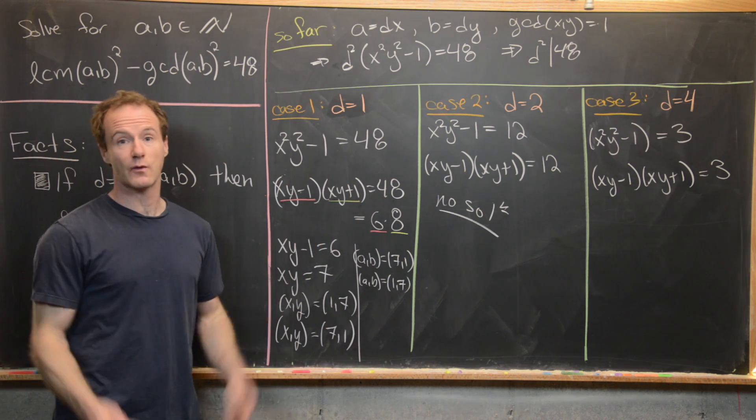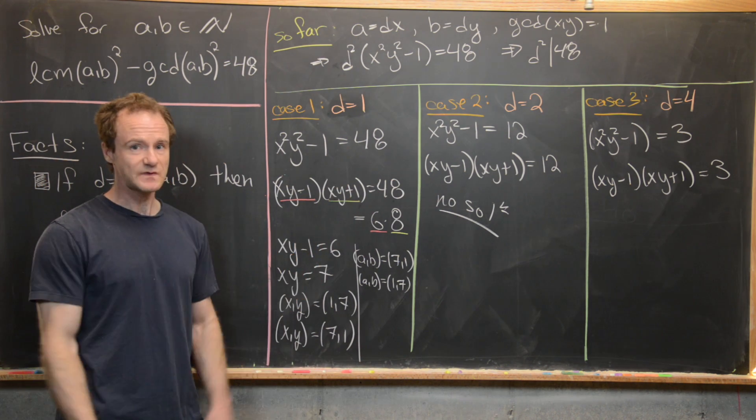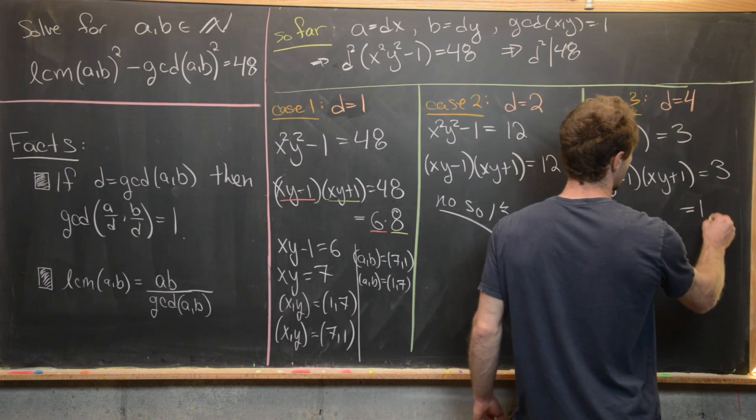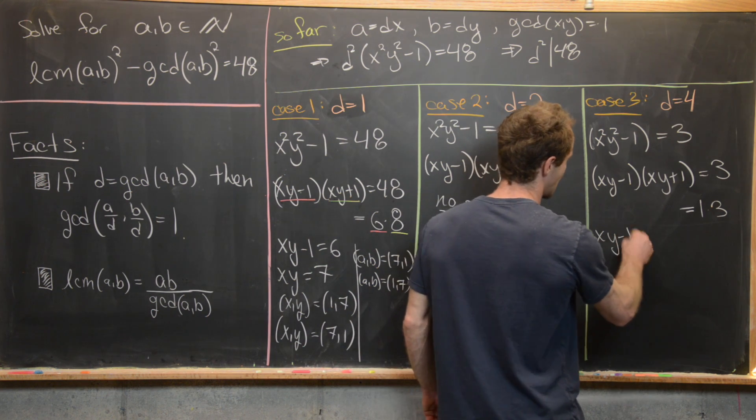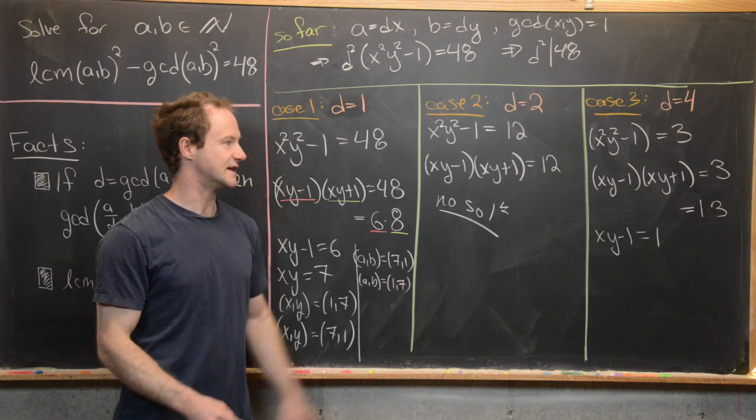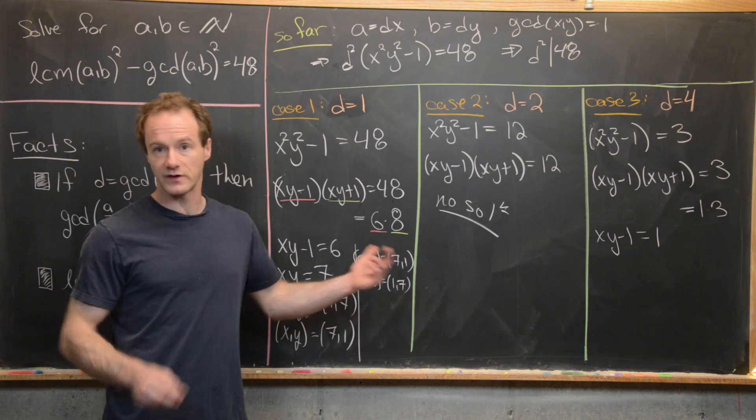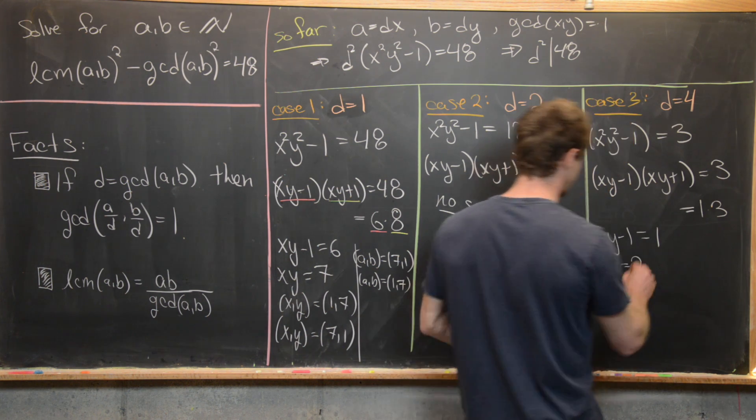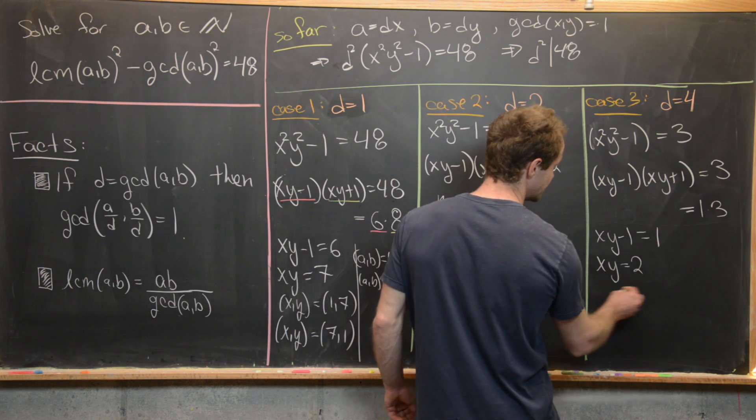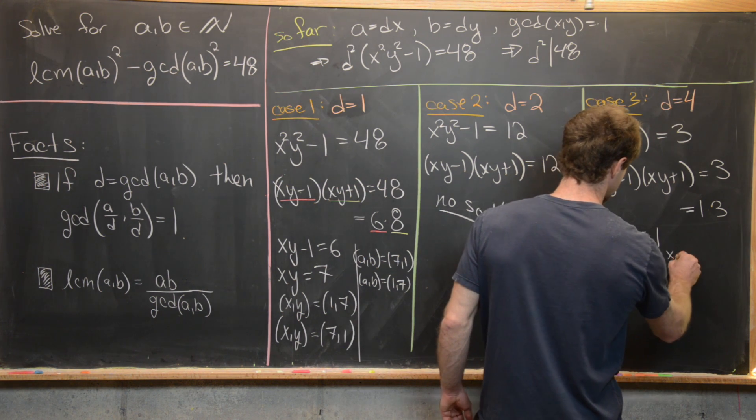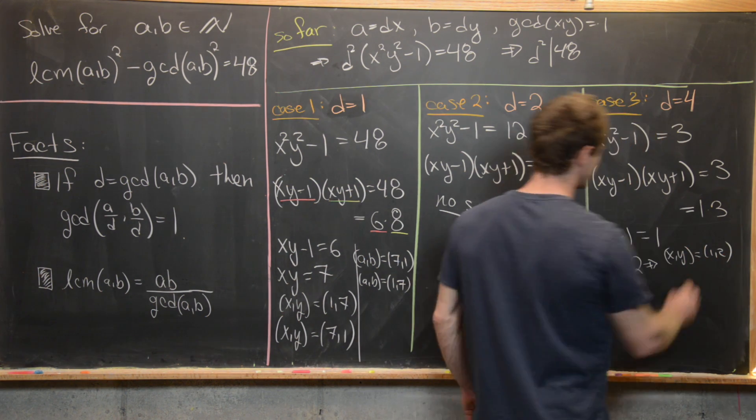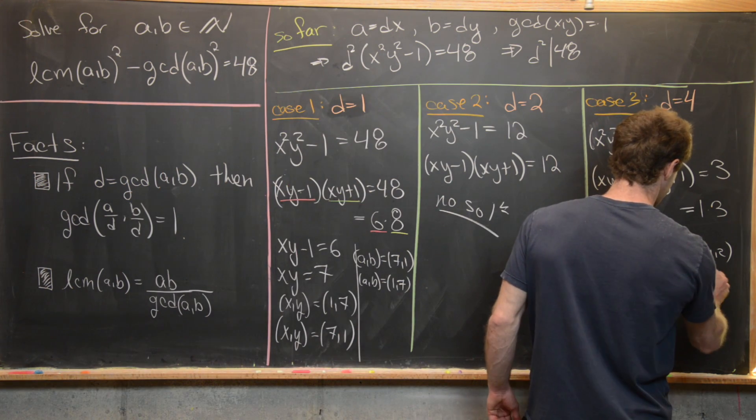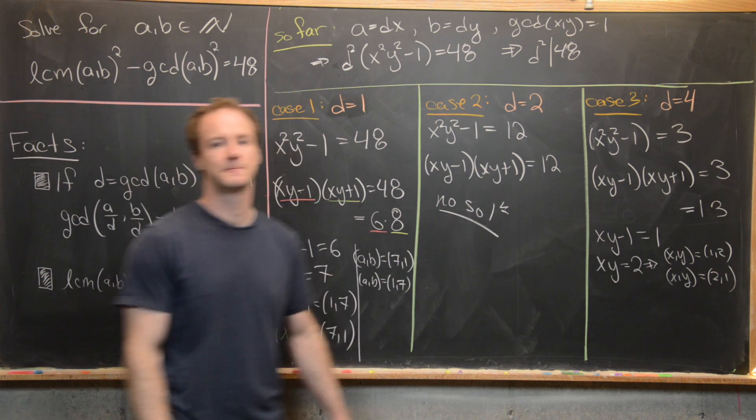But now there's definitely a way to factor 3 into factor pairs that differ by 2, and namely just 1 times 3. So we can go ahead and write this as 1 times 3. That means X, Y minus 1 equals 1. And then X, Y plus 1 will be equal to 3. But that gives you an equivalent equation here. But that means that X times Y equals 2. But that tells us that we get two solutions out of this. We have X, Y equals 1, 2. So in other words, X is 1 and Y is 2. Or X, Y equals 2, 1. Kind of the opposite one.